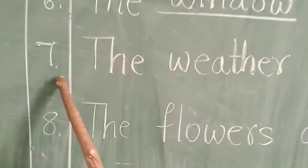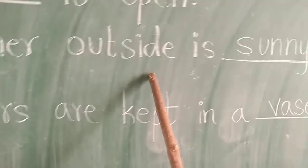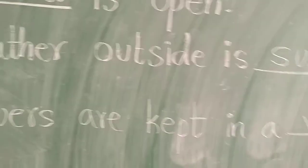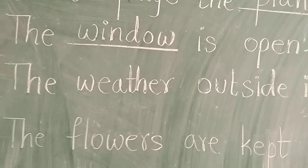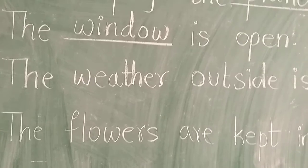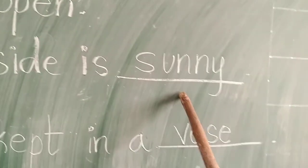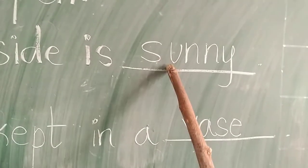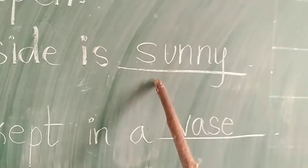Seventh one: The weather outside is dash. You can see the sun there in the picture. So the weather outside is — sunny. Spelling: S-U-N-N-Y, Sunny.